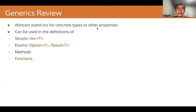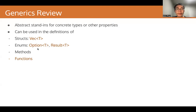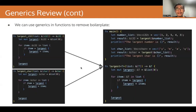First, what is genetics? Generics are basically abstract statements for concrete types or other properties. Generics can be used in the definition of structs, such as for the type stored by a vector, or enums for the type returned by Option or Result, or in methods, or in functions. In the generics lecture, we looked at an example of using generics in functions to remove boilerplate.